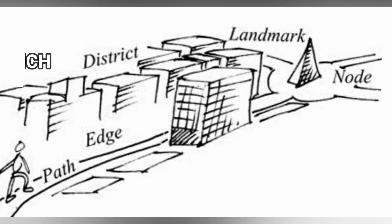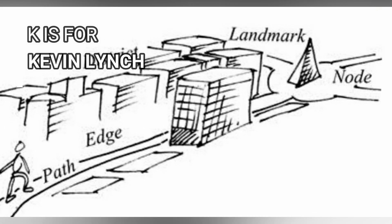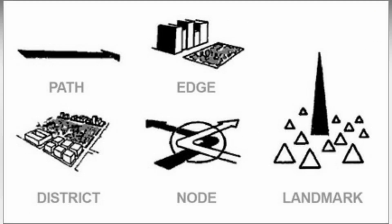K is for Kevin Lynch. Kevin Lynch describes five physical elements that form a city image: edges, nodes, paths, districts, and landmarks.